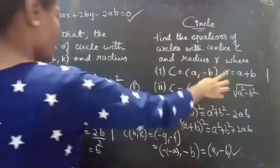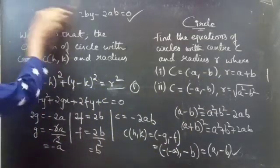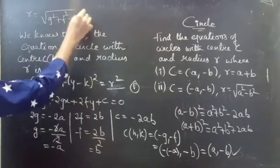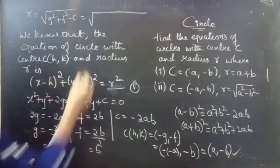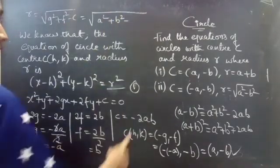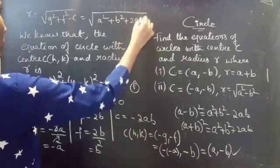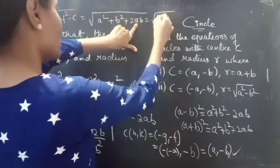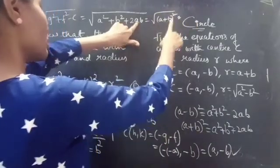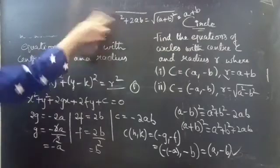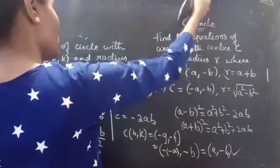You can also check the radius using the formula r equals square root of g squared plus f squared minus c. We have g equals minus a, so minus a whole squared is a squared, plus f squared which is b squared, minus c which is minus 2ab, giving plus 2ab. This equals square root of a squared plus b squared plus 2ab, which is square root of a plus b whole squared, which equals a plus b. This confirms our radius r equals a plus b, so the answer is correct.